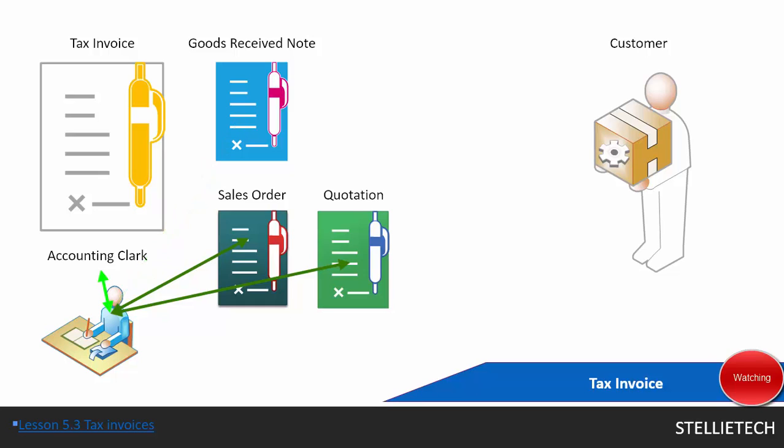The tax invoice is an official document made out to a customer stating that he or she owes you money. It specifies the terms of the payment, the details of the purchase, and the due date for payment. For tax purposes, it's always important to keep a printed copy of all your tax invoices, especially tax invoices over 10,000 rand.